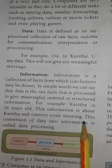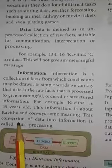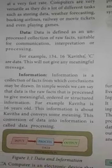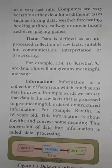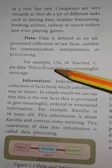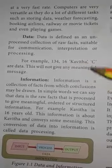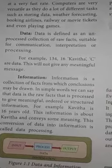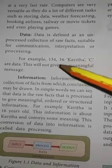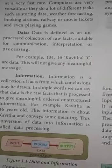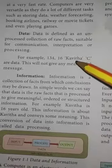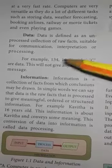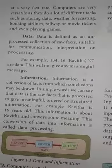For example, 'Kavitha is 16 years old, living at street number 134, door number 134, C section, C block, age 16' — this is complete information. Combining individual data points such as name, age, address, and section gives us a full, meaningful information record.